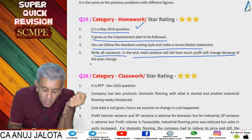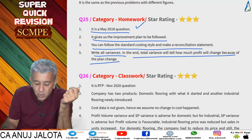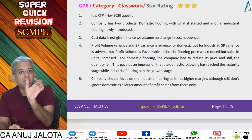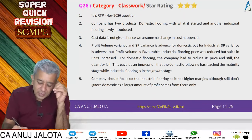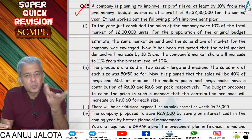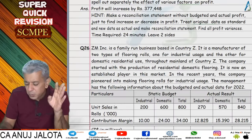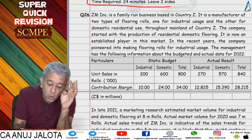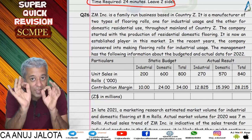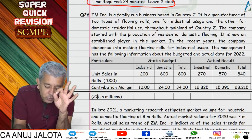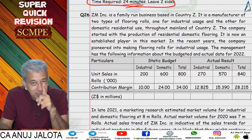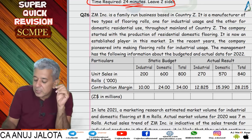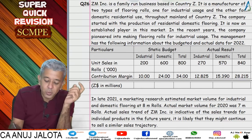This gives an improvement plan. Follow standard costing style, make a reconciliation, write all variances. The total variance tells you how much profit will change due to that plan change. It was not a very tough question but still worth trying. Please solve all homework section questions. The time required is given — that question should take 24 minutes in exams, so practice within that time limit.